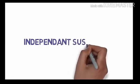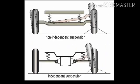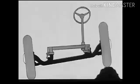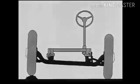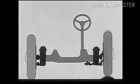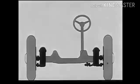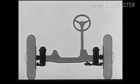A car suspension may be dependent or independent. In a dependent suspension, there is a rigid linkage between the two tires, and the force acting on one wheel will affect the other. An independent suspension system allows both wheels to move vertically up and down independently.